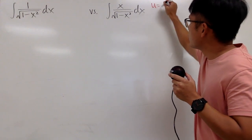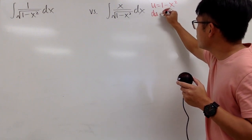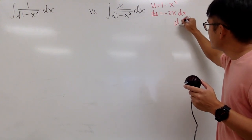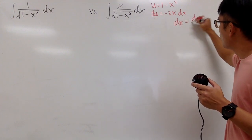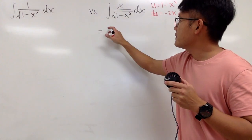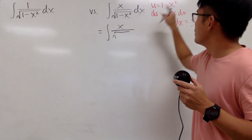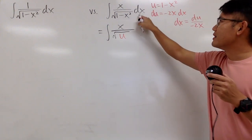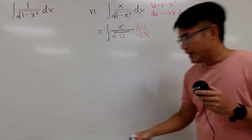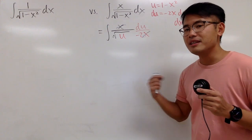So let me just let u equal the inside function, which is 1 minus x squared, and then differentiate both sides. I get du equals negative 2x dx, and isolating the dx, I get dx equals du over negative 2x. Now let's take this integral to the u world — we have x on the top over the square root of u, and then dx is du over negative 2x. We see that the x's cancel each other out nicely, so we are completely inside the u world.